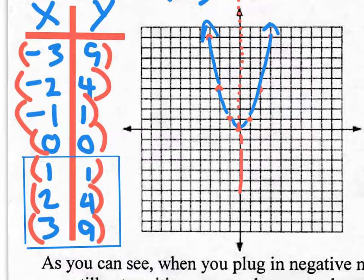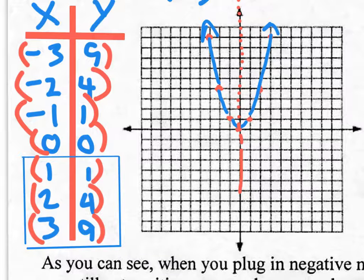This is called the axis of symmetry — like a mirror, both sides reflect perfectly. This point right here is 1, 2, 3 units away from the axis of symmetry, which means the point on the other side also has to be 1, 2, 3 units away. This one is 2 units away, and that one is also 2 units away.